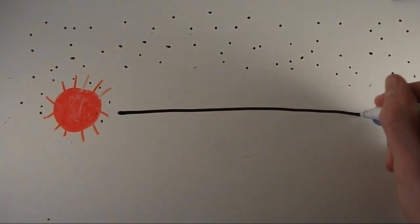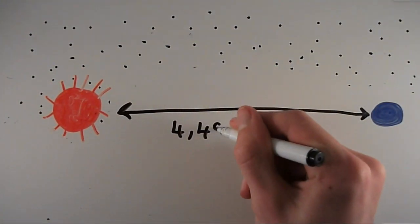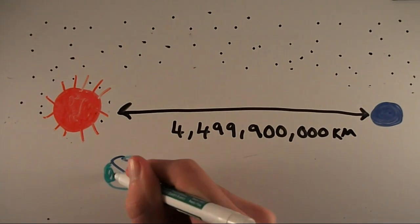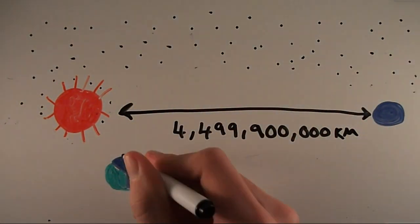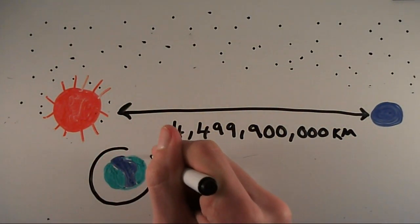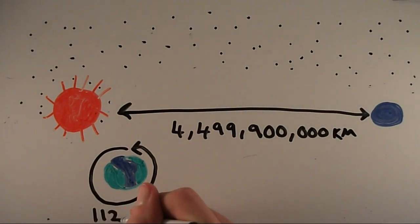Going back to how big the sun is, there's 4.49 billion kilometers distance between Neptune and the sun. You could go around the world just over 100,000 times and you would have traveled the distance between Neptune and the sun.